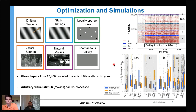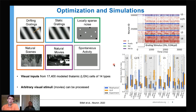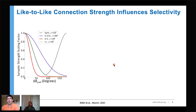Some metrics do well, some do less well, but overall we found performance to be pretty good. Metrics showing less good performance may indicate directions for improvement in future generations of the model. Through this exercise we also came up with predictions.